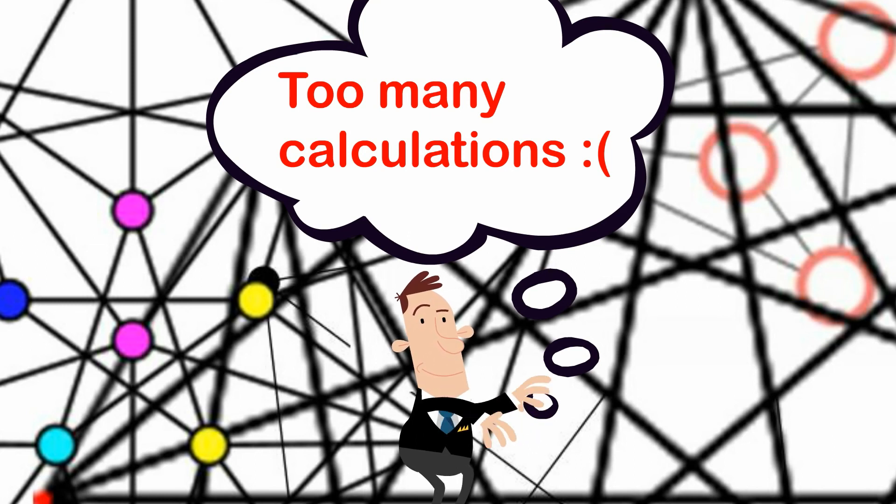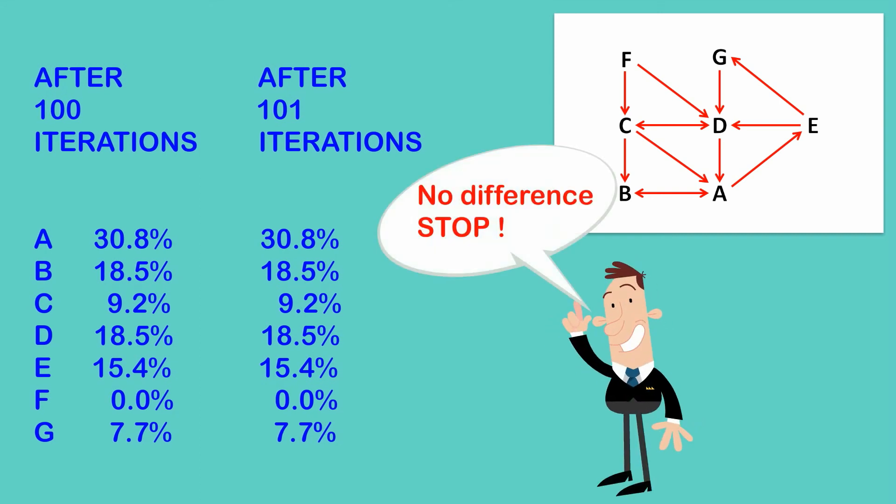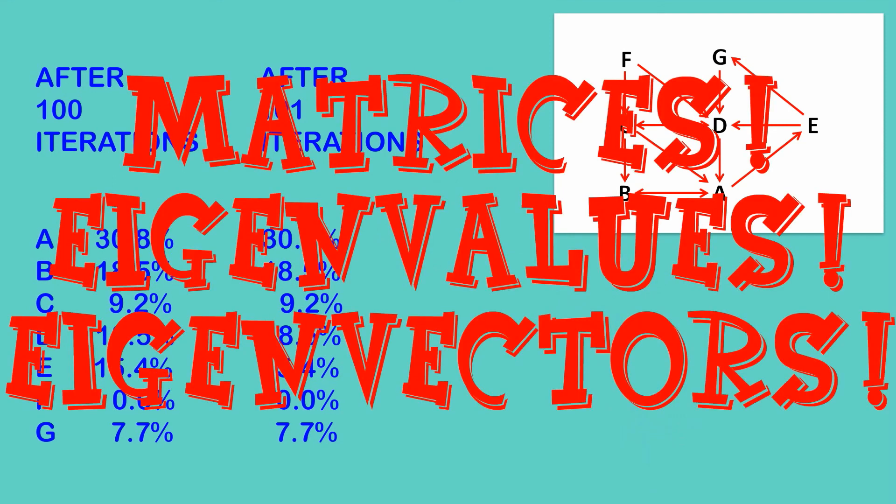The second problem is that Google is dealing with billions of websites, so this involves many more calculations than what I did. One way that Google can speed things up is to recognize that when we have done sufficient iterations, running further iterations makes no difference. That is, we can stop when another iteration makes no appreciable difference. This means that rather than doing millions of iterations, Google can use mathematical techniques involving matrices, eigenvalues, and eigenvectors, typically taught in first-year university, to mathematically solve for the website importance rankings. And that, in a few minutes, is how Google searching works.